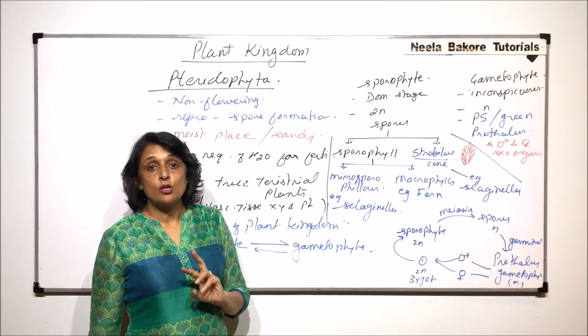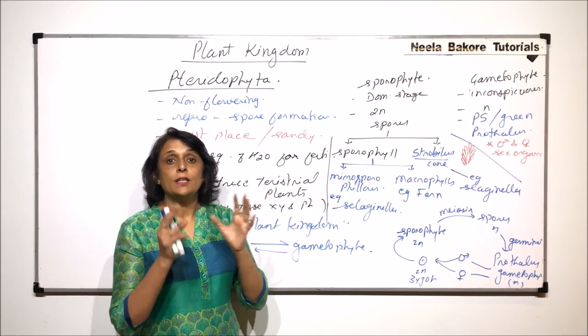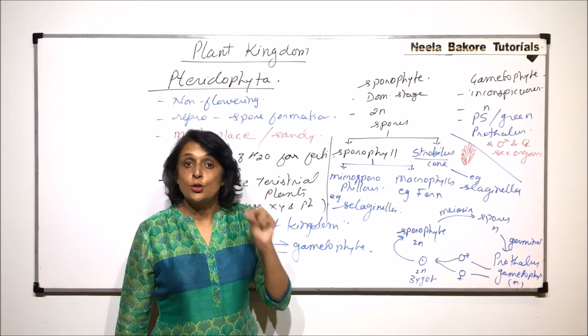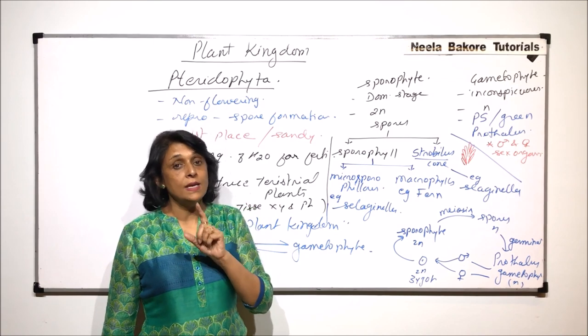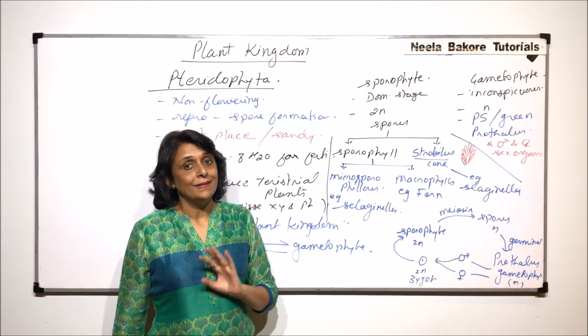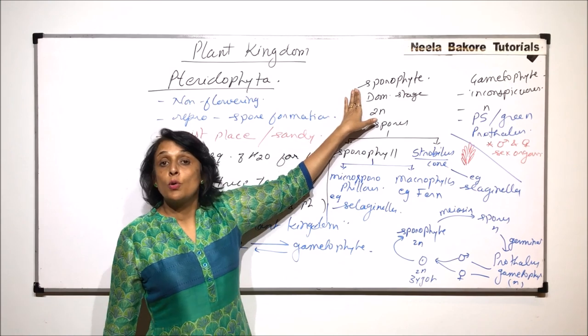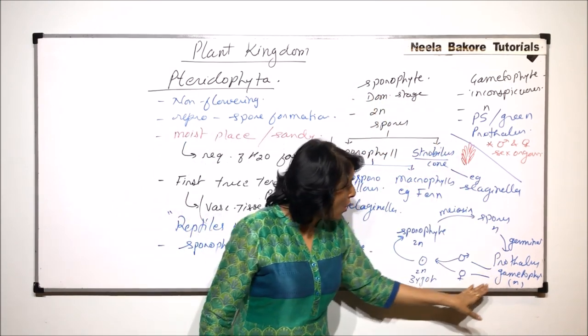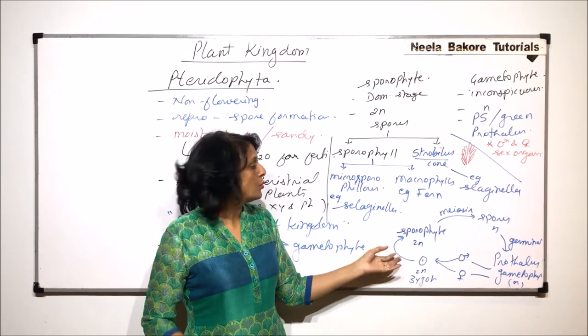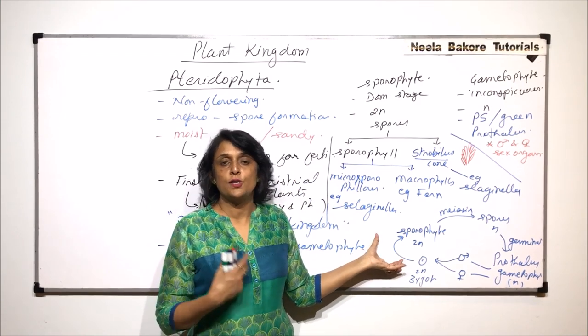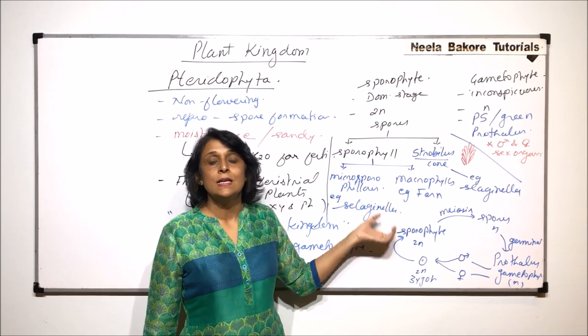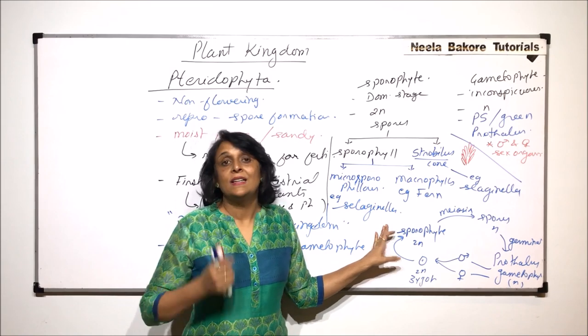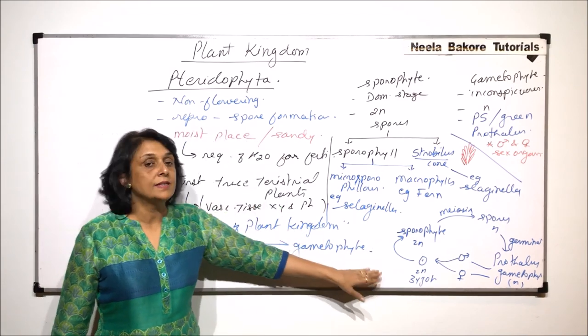Plus, in case of bryophytes, we saw that the sporophyte, that is the foot, seta and capsule part, remains attached to the female branch. That means the sporophyte was dependent on the gametophyte. Here the sporophyte is completely independent. It grows on this prothallus, but very soon it becomes self-sufficient. It starts making its own food, starts absorbing its own water, minerals and everything. So this is how the pteridophytes life cycle takes place.